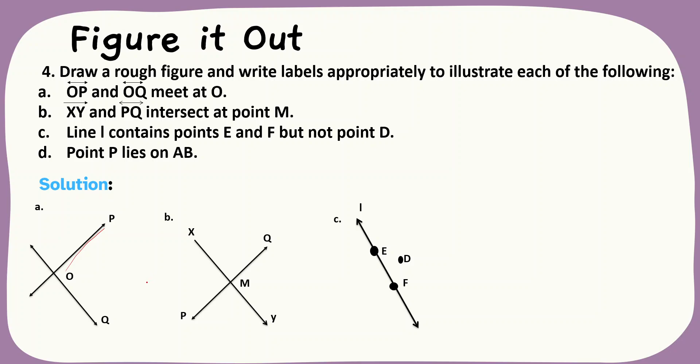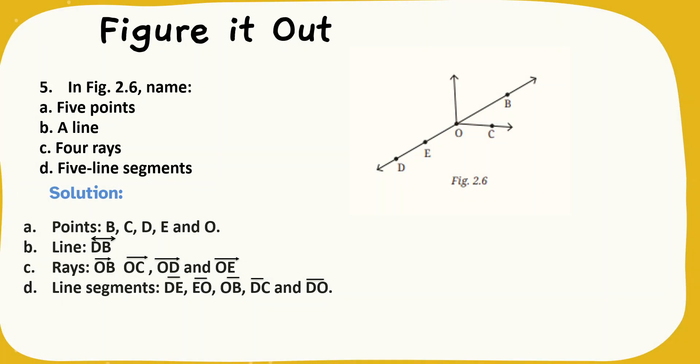See, line L contains two points E and F on this one but D is not on the line L. Similarly, point P lies on AB. Here point P lies on AB.